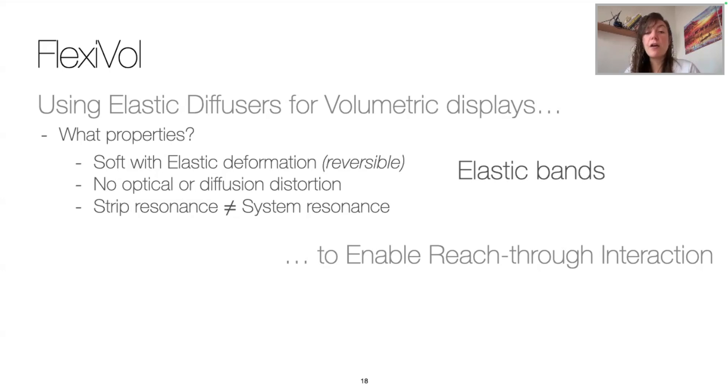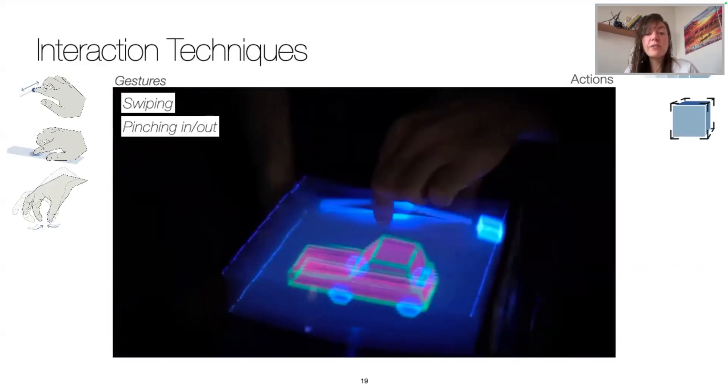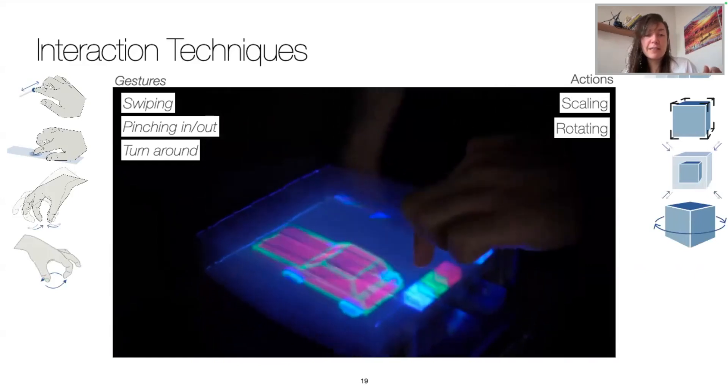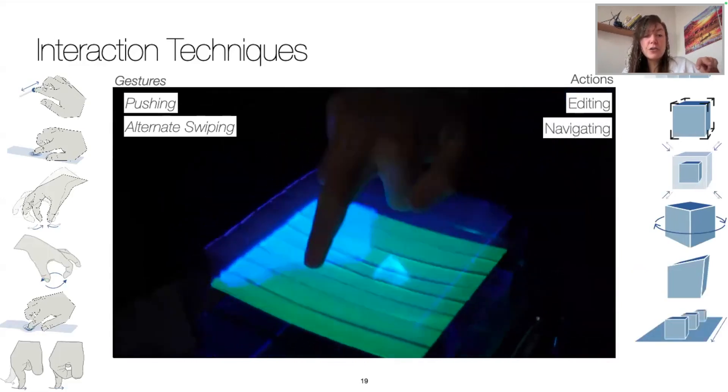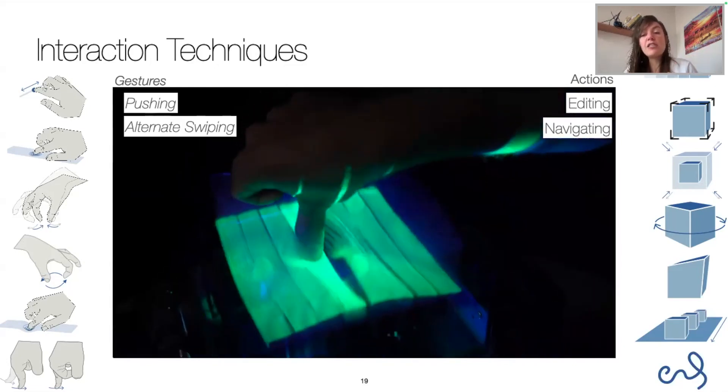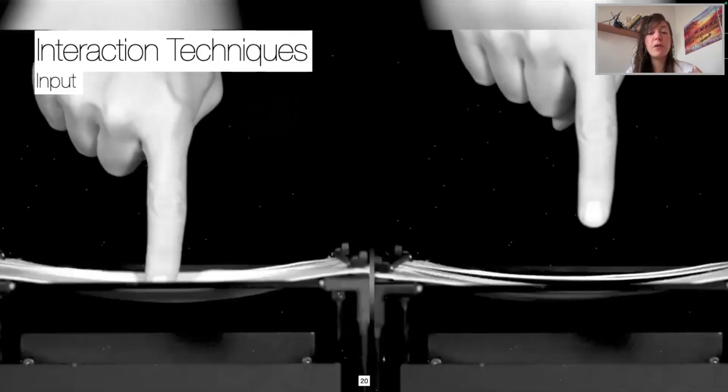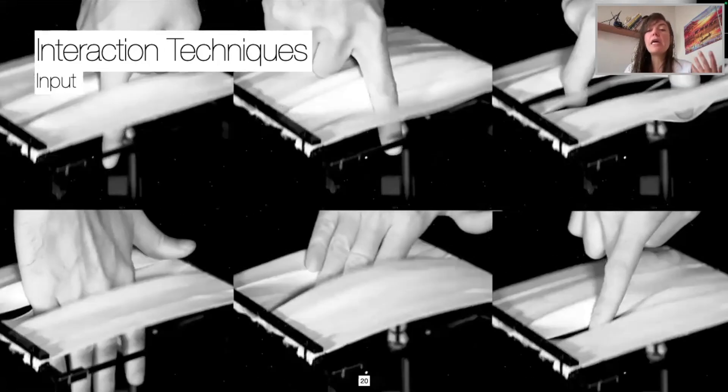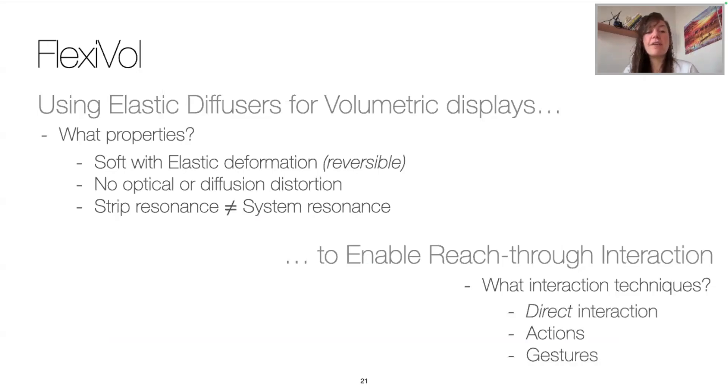So now let's focus on the second part of FlexiVol. What interaction techniques can we perform with FlexiVol? First, a user can swipe into the display volume or touch to select. A user can also scale an object using a menu or pinch it in and out and can rotate objects. He can also push onto the strips to edit, let's say, a landscape and navigate performing alternate swiping. More actions can be performed, such as tracing, twisting, squeezing, zooming. And gestures can be done with one or more hands, one or more fingers, one or more users. Interaction can also occur with the strip or between the strips in the lateral, longitudinal or diagonal direction without obstructions of fingers getting stuck between strips. So we provided a non-exhaustive list of direct interaction using FlexiVol as a combination of actions and gestures.